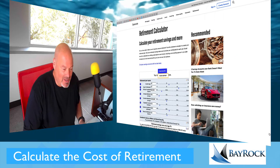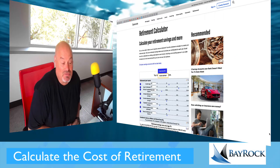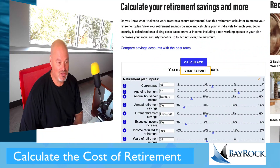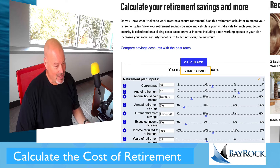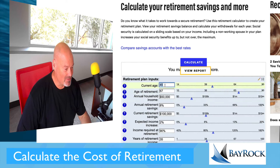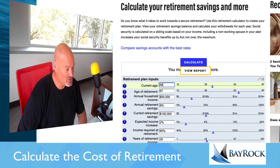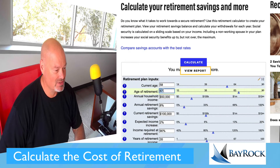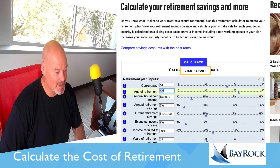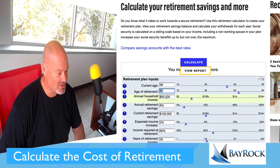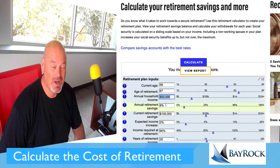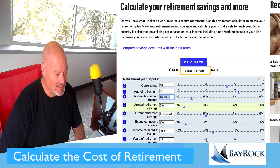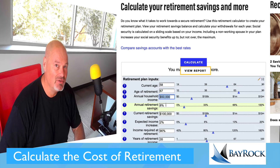I rode my car today because it was raining, so I thought I'd jump in here. Obviously you know your age, so you put your age in the retirement plan inputs — your current age and when do you want to retire. 67 is the default. Annual household income — you probably don't have one yet, or maybe you do, I never know, so just take a guess.